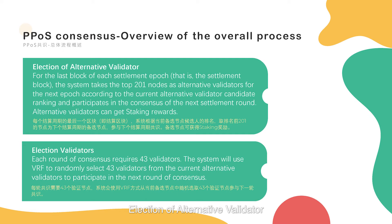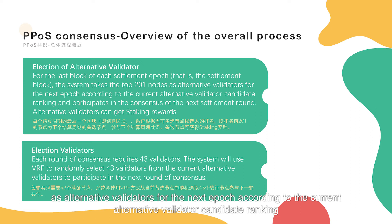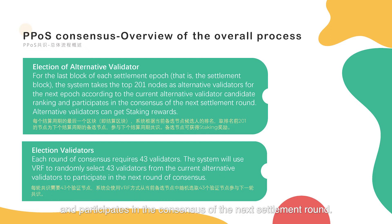Third, election of alternative validators: for the last block of each settlement epoch, the system takes the top 201 nodes as alternative validators for the next epoch, according to the current alternative validator candidate ranking, and participates in the consensus of the next settlement round. Alternative validators can get staking rewards.